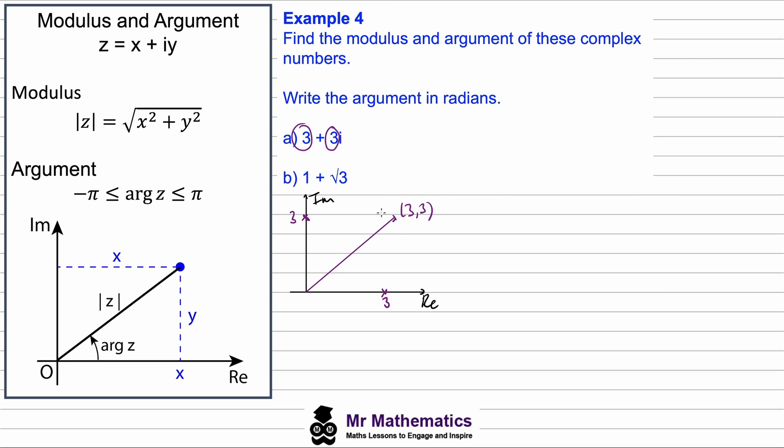So we want to work out what's called the modulus and the argument of this complex number. Well, the modulus is the magnitude of this complex number coming from the origin, so it will be the length of this hypotenuse. We can work out the modulus of z using Pythagoras's theorem: this will be the square root of 3² + 3², so the square root of 18.